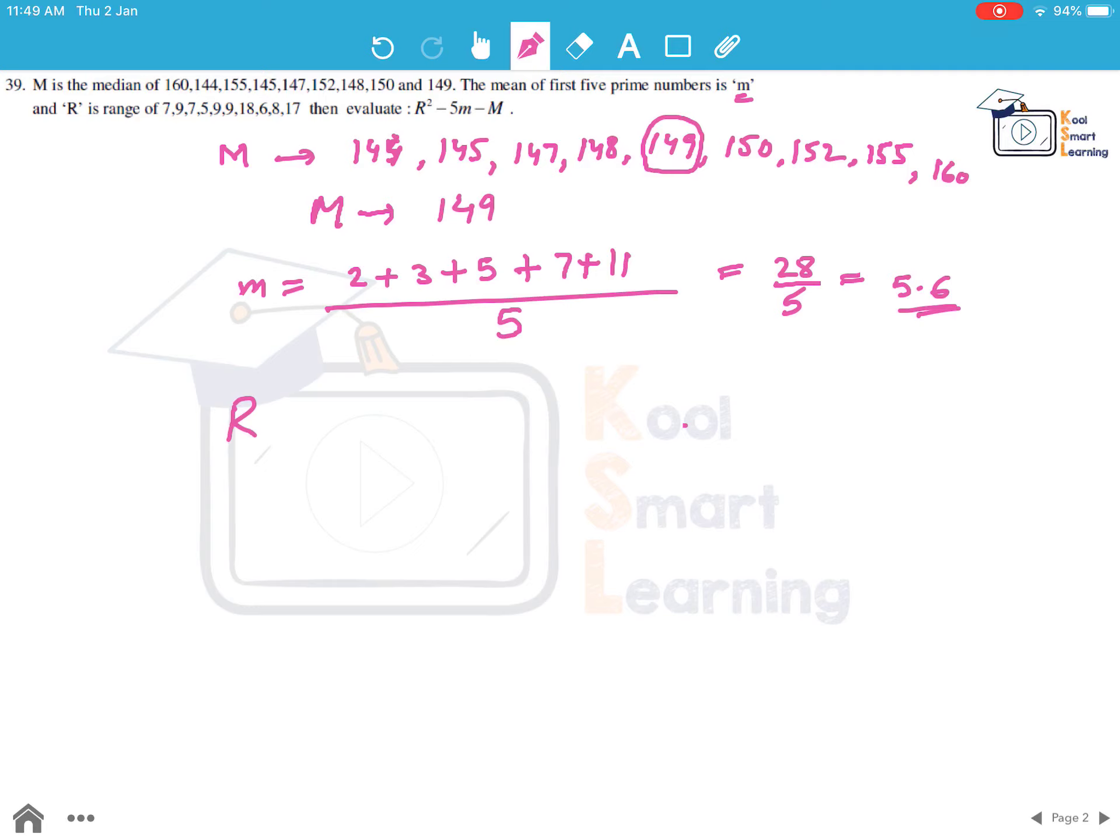Now what is capital R? This is the range of this set of numbers, which is the highest minus the smallest, so 160 minus 144, which is 16. Wait, actually the highest is 160 minus the smallest is 144, so this comes out to be 16. Now we need to find out R² minus 5 times m minus M. So this is 16² minus 5 into 5.6 minus 149, which equals 256 minus 28 minus 149. This comes out to be 79. Actually checking the calculation: 13² is 169 minus 28 minus 149 comes out to be minus 8. So this is the answer to this question.